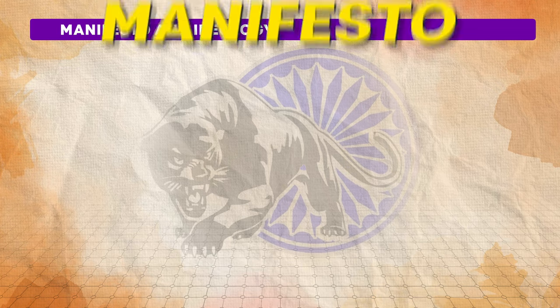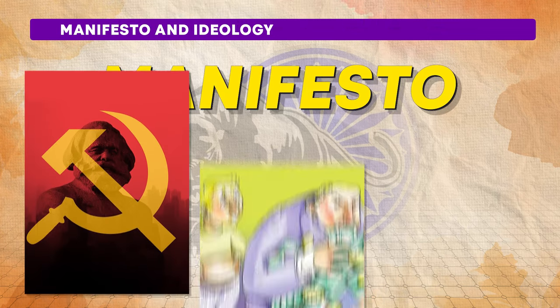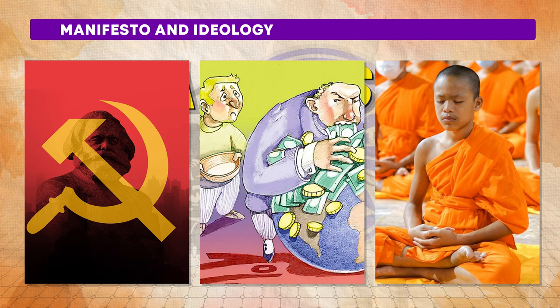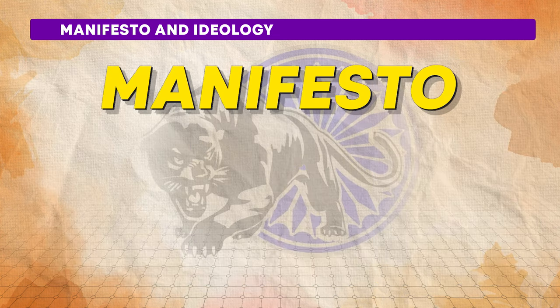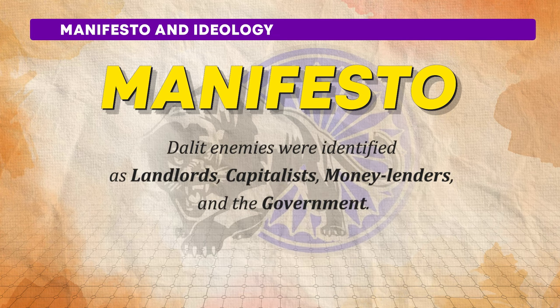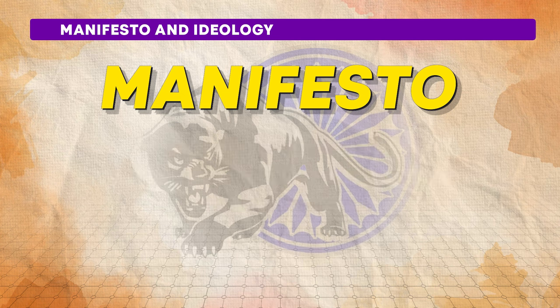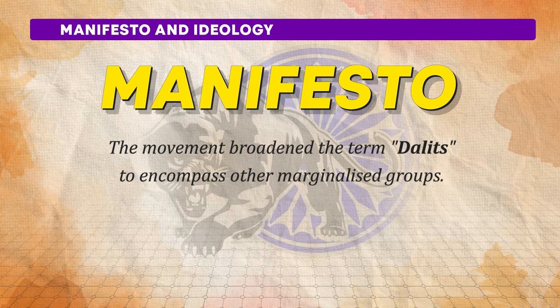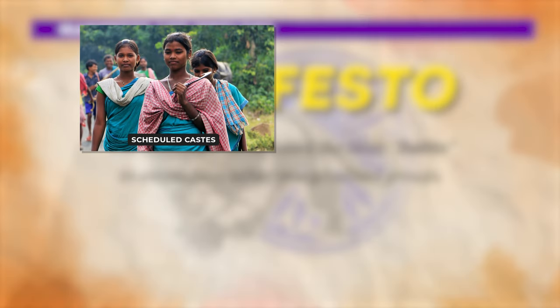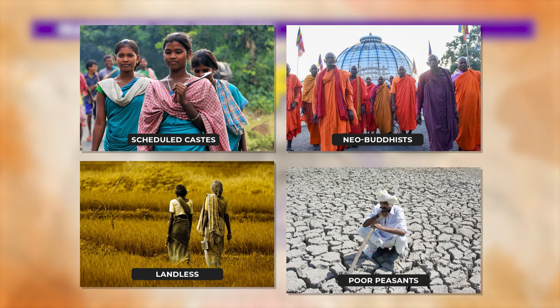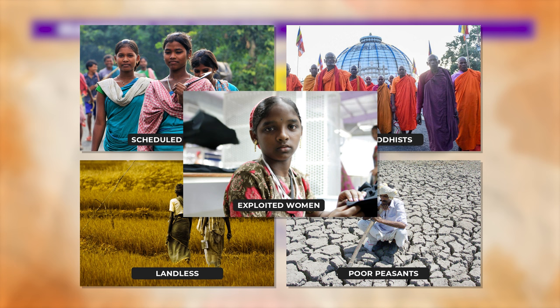The Dalit Panther movement published a manifesto that uniquely fused Marxist capitalism with Buddhism, offering a comprehensive framework for social change. In this manifesto, Dalit enemies were identified as landlords, capitalists, moneylenders and the government, all controlled by ruling castes. Moreover, the movement broadened the term 'Dalits' to encompass other marginalized groups such as low-castes or scheduled castes, neo-Buddhists, landless and poor peasants, as well as exploited women, aiming to forge solidarity among various marginalized groups against systemic oppression.